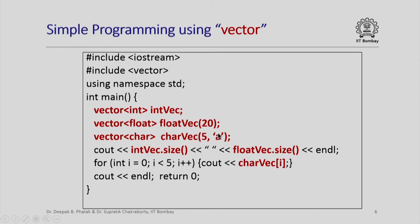There are multiple ways to declare a vector object: if you do not specify the number of elements the vector will be size 0; otherwise it will be the specified size; or you can initialize all elements with a particular value. The vector class provides the member function 'size()', which returns the number of elements. So printing 'int_vec.size()' and 'float_vec.size()' gives 0 and 20 respectively.